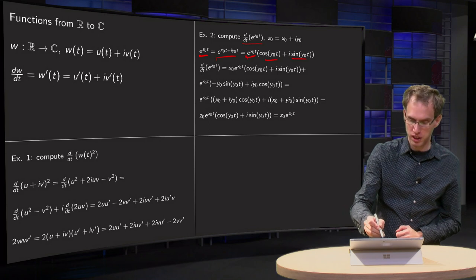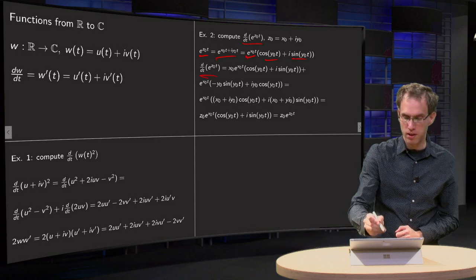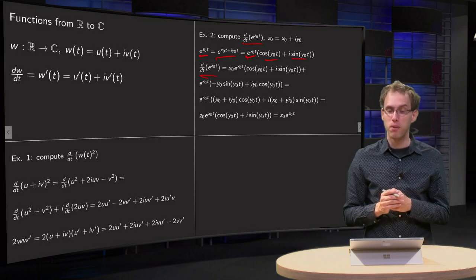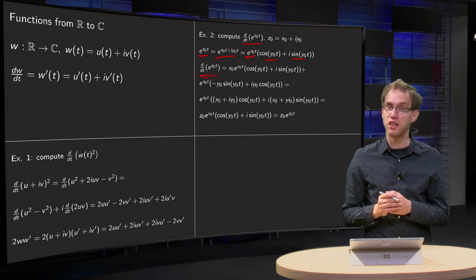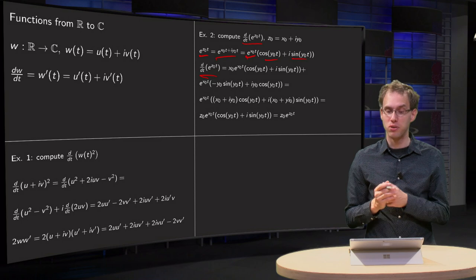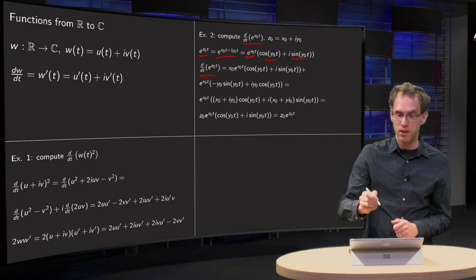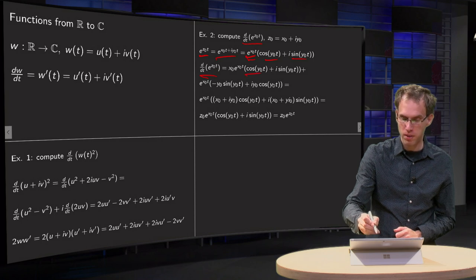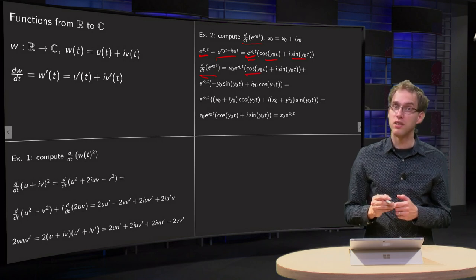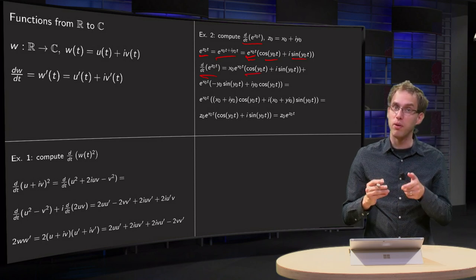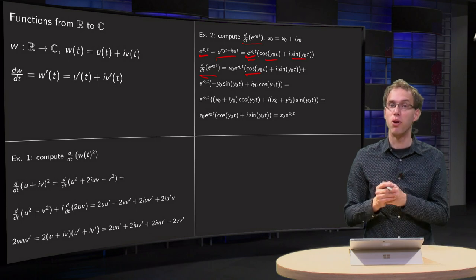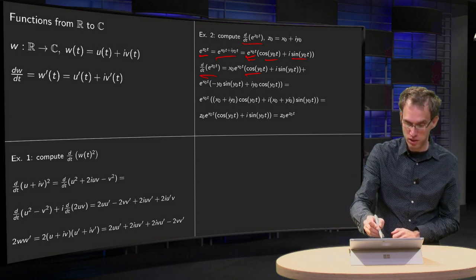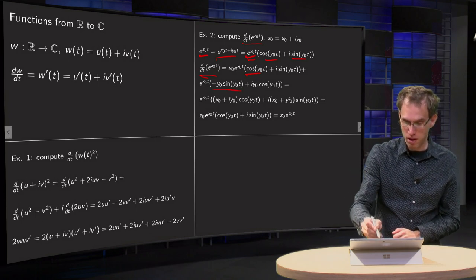What happens if we differentiate this? We have to differentiate the real part, so we differentiate e^(x₀·t)·cos(y₀·t). That yields x₀·e^(x₀·t)·cos(y₀·t), and also e^(x₀·t) times the derivative of cos(y₀·t), which gives −y₀·sin(y₀·t).